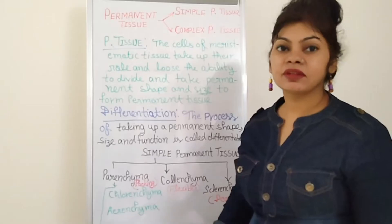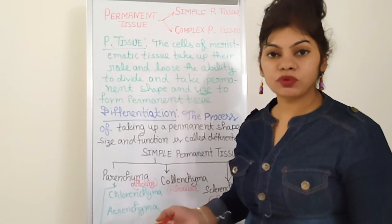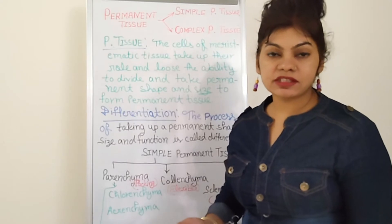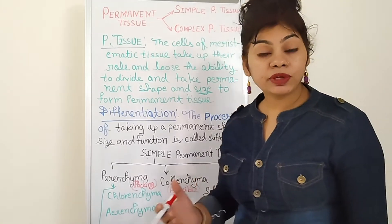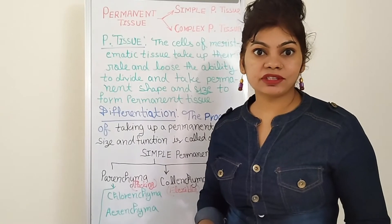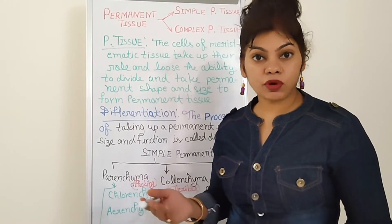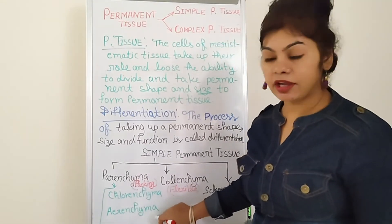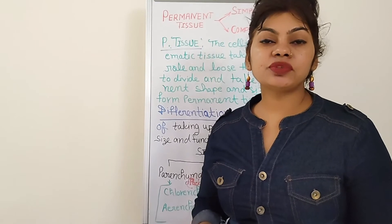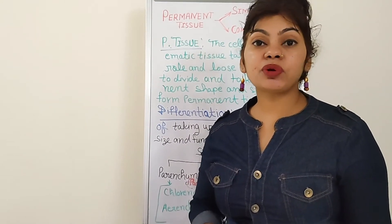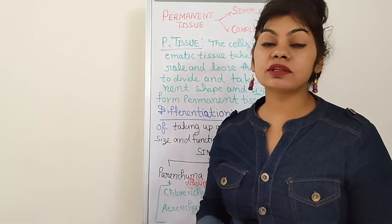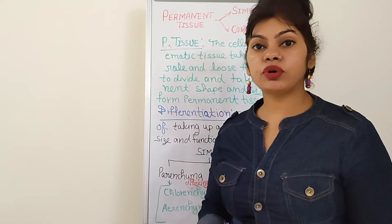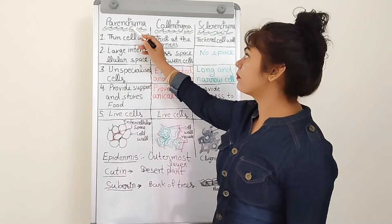When parenchyma tissue contains chlorophyll and performs photosynthesis, it is called chlorenchyma. In aquatic plants, there are large air cavities that provide buoyancy to the plant to float — so that type is called aerenchyma, meaning air. Parenchyma tissue provides support to the plants and stores nutrients and water.